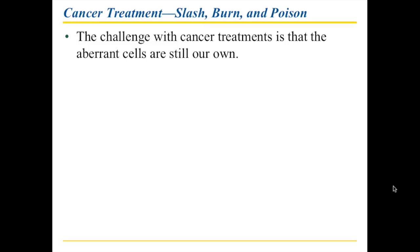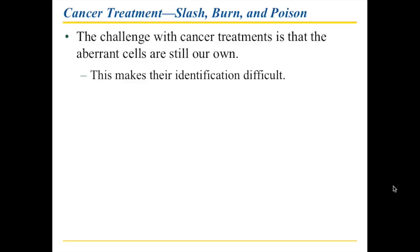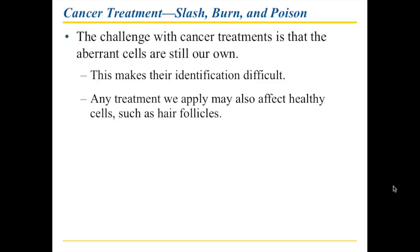What do you do about cancer? Treatments nowadays fall into three main categories: slash, burn, and poison. The problem with all of these is that cancers are still our own cells, so no matter what you do with cancer treatment, you are going to kill your own cells. You're trying to target only the cancer cells, but that's not always entirely possible, making it very difficult to create chemical or biological means that target only specific cancer cells. As a consequence, any treatment may also affect healthy cells.